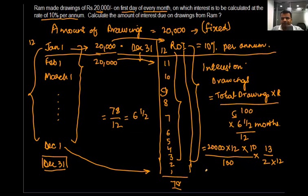This 12 will knock off this 12. This will give you 1,000 times 13. So the interest on drawings, the total amount of drawings made, is going to be equal to Rs. 13,000.